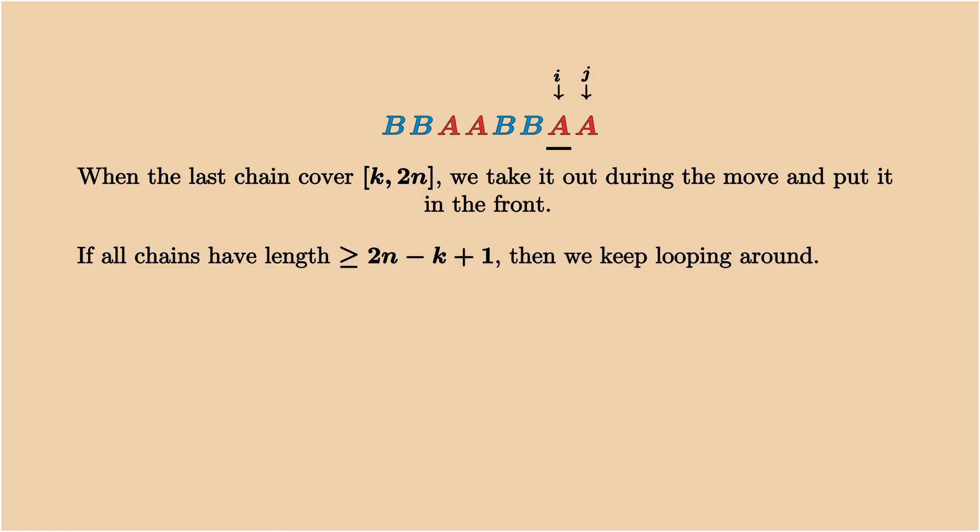Now there are two scenarios. First, if all the chains in the sequence have length at least 2n-k+1, then no matter how we move, the last chain will always cover both k and 2n. In this case, we will just be looping around every time moving the last chain to the left.